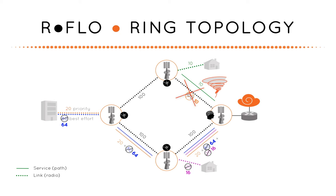Only if there was a complete link failure would traffic be rerouted using these more basic failover schemes. Switchover time may take a few seconds, and the end result would be 130 megabits per second competing for 100 megabits per second of link capacity, again affecting services and degrading network efficiency with significant packet loss.